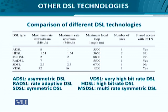Then we have Multi-rate Symmetric DSL (MSDSL), which allows a choice of multiple variable data rates obtained in a symmetric manner. The distance here can go very long — around 8,800 meters, which is about nine kilometers. However, it also cannot share the line with telephone calls. Another interesting variant is Rate Adaptive DSL (RADSL), where the asymmetry is huge: 7 Mbps on the downstream and only 1 Mbps on the upstream.